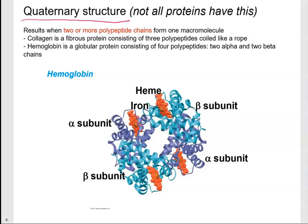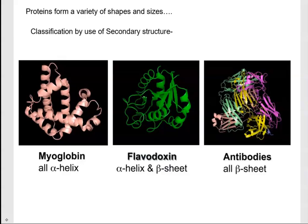Quaternary structure is not present in all proteins. It results when you have two or more polypeptide chains. A good example is hemoglobin, which carries oxygen in the blood. It's made up of four subunits: two alpha subunits and two beta subunits that come together into a globular structure. Proteins can have different shapes — myoglobin has many alpha helices, while others have both alpha helices and beta sheets, and antibodies have many beta sheets.